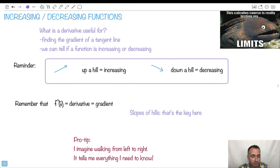Now remember that f' is the derivative, which is the gradient. This is all related to slopiness or how steep this is. So a little pro tip: I just imagine I'm walking from left to right, and that tells me everything I need to know. If I'm going up a hill, then its derivative is positive. So this is the main concept. Let's see if we can apply this.